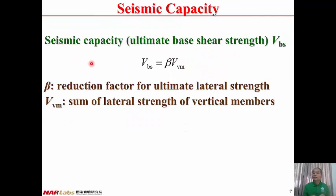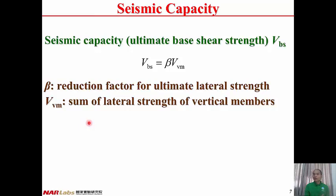In this lecture, we will focus on seismic capacity from simplified detail evaluation. Seismic capacity, or the ultimate base shear strength of a building, VBS, equals beta times VVM. VVM is the sum of lateral strength of vertical members. Beta is the reduction factor for the ultimate lateral strength, because the lateral strength of all vertical members may not develop at the same time, so we have to reduce the summation.